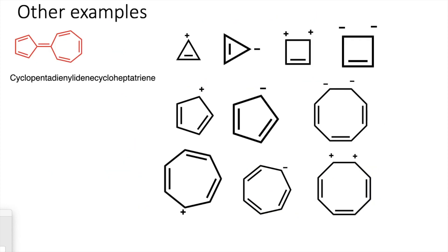Moving to the next section, we have some examples of dipolar resonance. In one example, electrons are transferred toward one end, making a cyclopentadienyl ring with a negative charge and six pi electrons, while the other end resembles a tropylium cation with six pi electrons, making it stable.